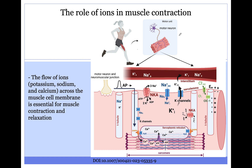Ions have a very important role in muscle contraction as well as muscle relaxation. What we're looking at here is a schematic of the muscle cell, and what we can see is that there's a variety of ions — these charged molecules — that need to move into or out of the cell for the muscle to be able to contract properly.